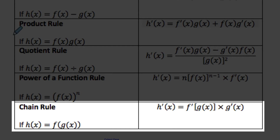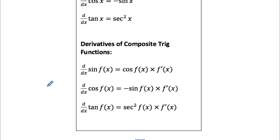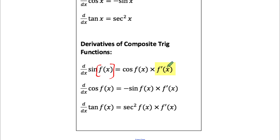Let's focus on chain rule. Chain rule is when you have a function of a function. If we're differentiating f of g of x, we think of f as the outside function and g as the inside function. We do the derivative of the outside function with respect to the inside function, times the derivative of the inside function. So if we apply that to trig functions — say sine of f(x) — the derivative is cosine of f(x) times f prime of x.